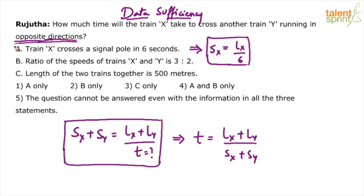Because there is only one equation with two variables. We don't know what is Sx and what is Lx. We will not get anything out of it. So statement A alone is not the answer. So immediately option one also gets ruled out because option one says A only sufficient to answer the question. Not possible. Look at statement B. Ratio of the speed of train X and Y is 3 to 2. So this would mean that Sx by Sy equals 3 by 2.